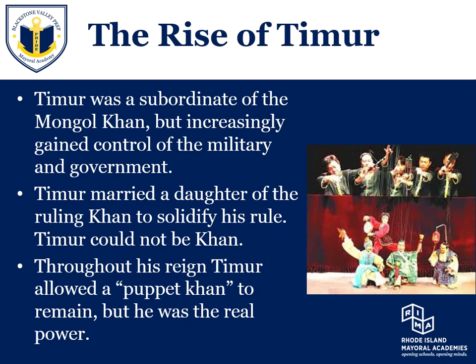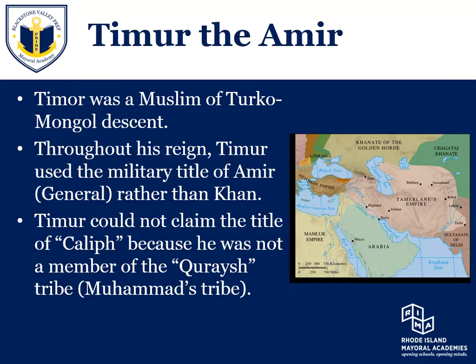Instead of being Khan, Timur selects the title of Amir. This reflects his own descent and beliefs — Timur is a Muslim of Turco-Mongol descent. His family has a connection to the Mongols, but additionally to the traditional Turkish tribes that live throughout that area. The title Amir itself is a military title, the equivalent of general. We see in the world today a number of leaders that take the title of general or colonel or other military titles and yet are the head of state. This is what Timur does — he's not going to take the title Khan because he's not a descendant of Genghis Khan and doesn't want further problems with them.